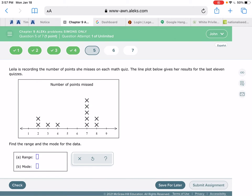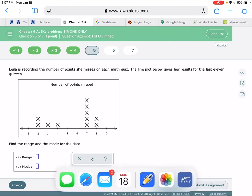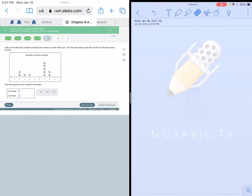Okay, so if we're looking at finding the range and the mode for the data, the first thing we want to do and now I'm gonna pull up notability here.